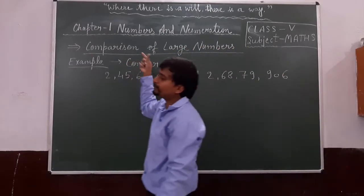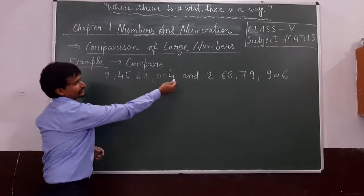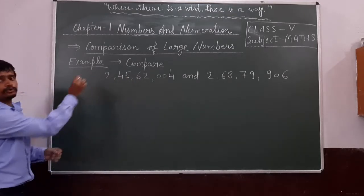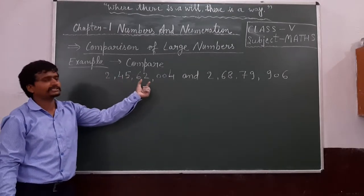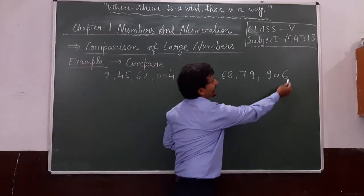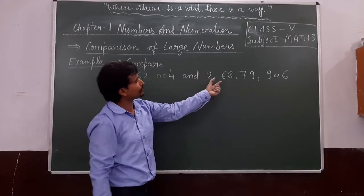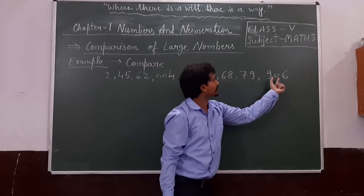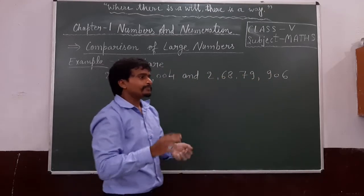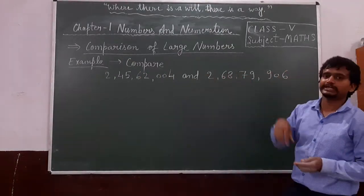Now, the example is: compare these 2 numbers — 2,45,62,400 and 2,68,79,906. First of all, count the number of digits in both these numerals.